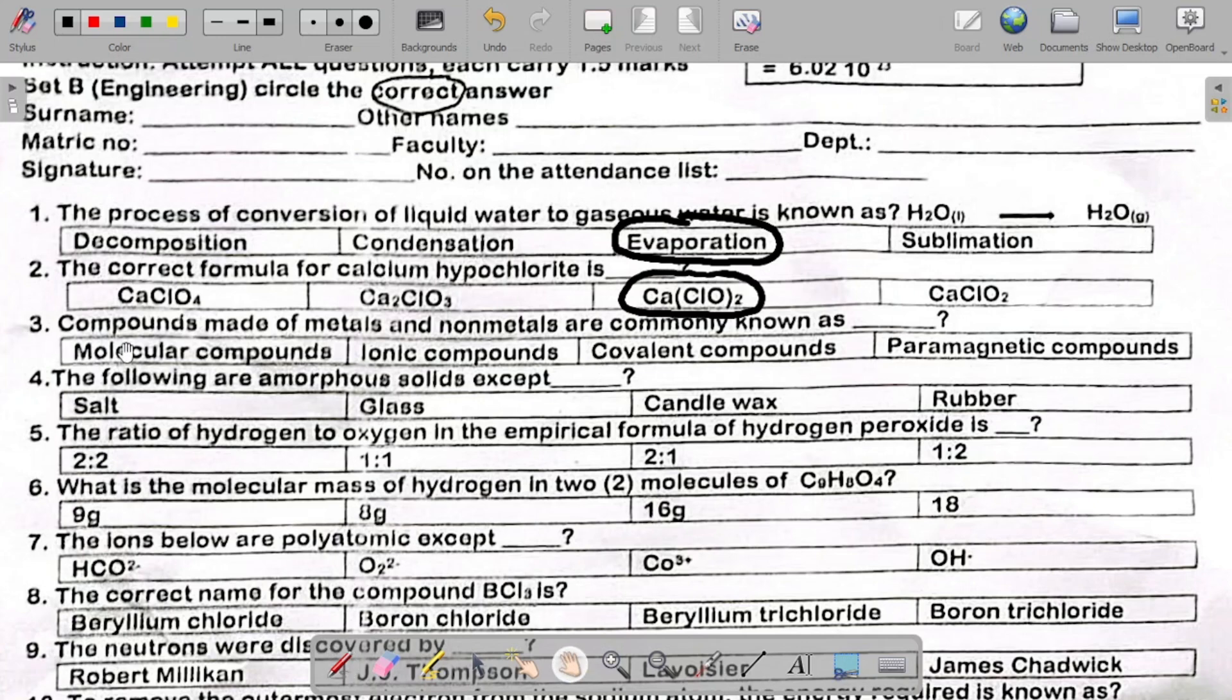Number three says compounds made of metals and non-metals are commonly known as. The answer there is ionic compounds. So compounds made of metals and non-metals are commonly called ionic compounds.